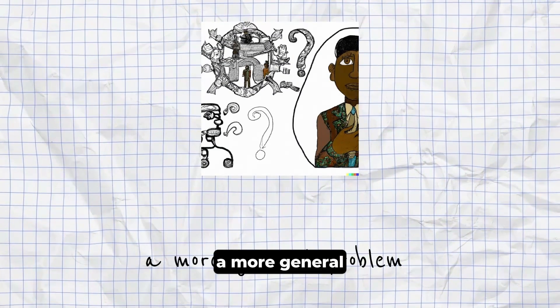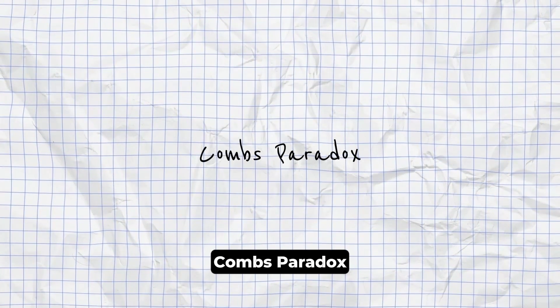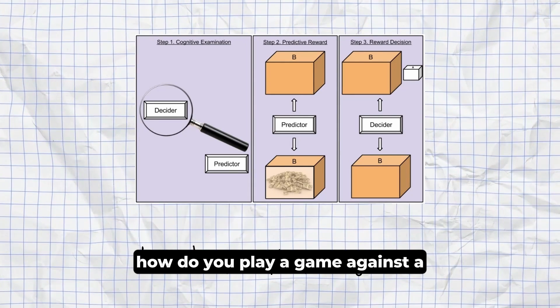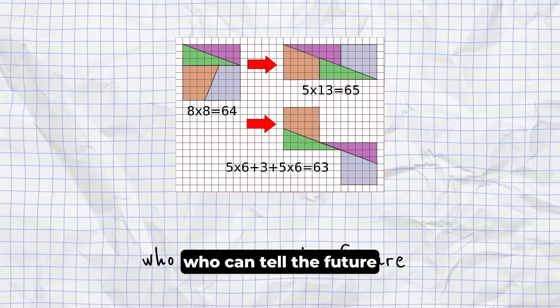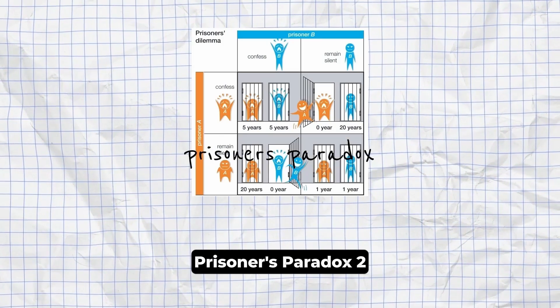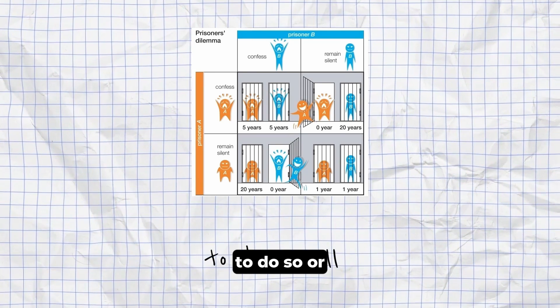Inventor's Paradox. It is easier to solve a more general problem that covers the specifics of a sought-after solution. Newcomb's Paradox, often referred to as the Chess Paradox. How do you play a game against an omniscient opponent? An example of this is a chess game played by someone who can tell the future and someone who can read the other's mind. Prisoner's Paradox. Two prisoners might not cooperate, even if it's in both of their interests to do so.